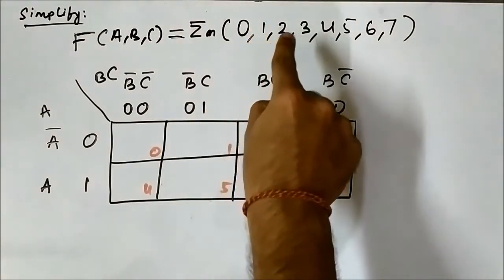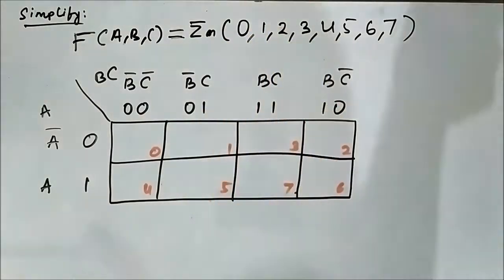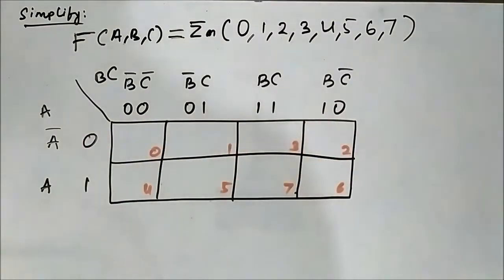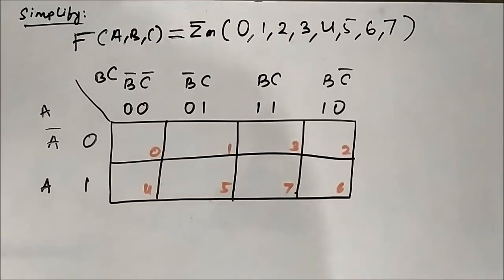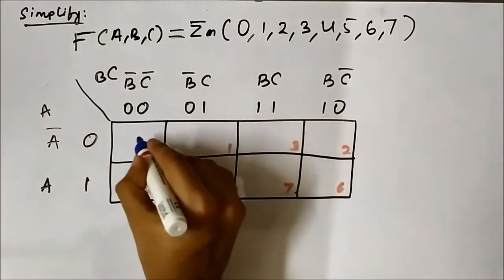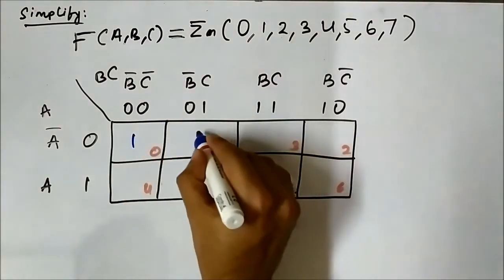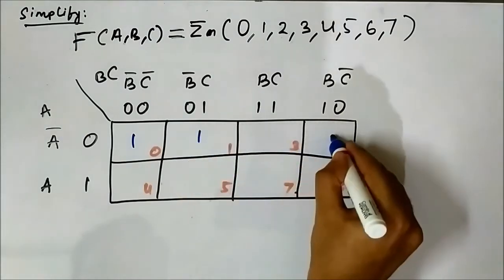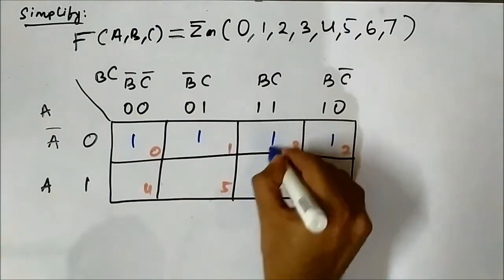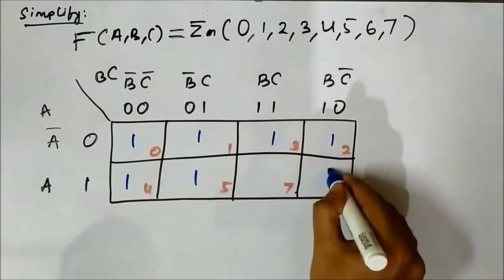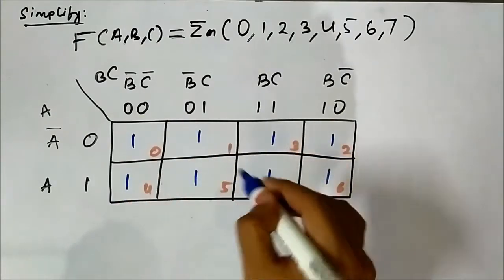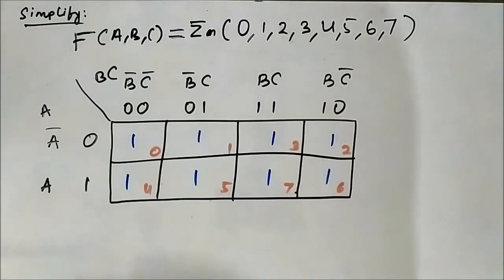All cells 0, 1, 2, 3, 4, 5, 6, 7 are present. All the cells are present, so we will mark all these cells as 1.